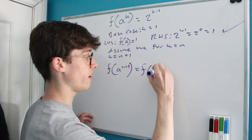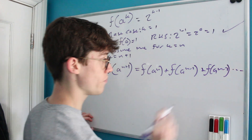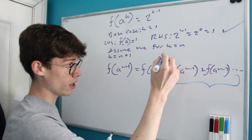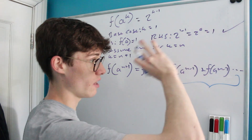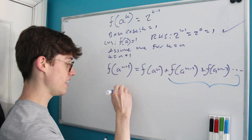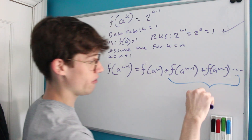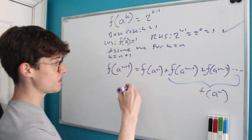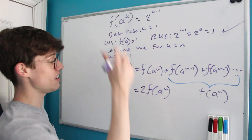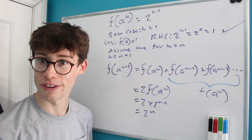For the inductive step, f(a^(n+1)) = f(a^n) + f(a^(n−1)) + ... + f(a) + f(1). Notice that f(a^n) itself equals f(a^(n−1)) + f(a^(n−2)) + ... + f(1). So f(a^(n+1)) = f(a^n) + f(a^n) = 2·f(a^n). We've assumed f(a^n) = 2^(n−1), so f(a^(n+1)) = 2^n = 2^((n+1)−1). The induction is complete.